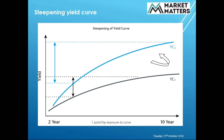Here we've got the steepening of the yield curve, which is changing quite a lot at the moment. We'll probably go into more depth in coming days with a more formal report. In layman's terms, the steepening of the yield curve is about long-term rates going up more so than shorter-term rates — for example, a two-year yield at 2% versus a 10-year yield at 3.5% or 3.6%. It's that relative movement in long-dated yields versus short-dated yields.